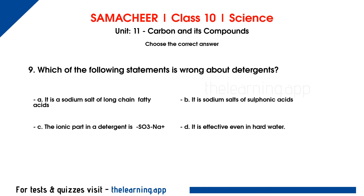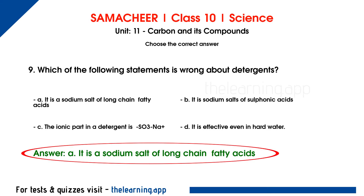Ninth question. Which of the following statements is wrong about detergents? Option A. Sodium salt of long chain fatty acid. Option B. Sodium salt of sulfonic acid. Option C. The ionic part in a detergent is SO3Na+. Option D. It is effective even in hot water. The correct answer is option A — that is the wrong statement. Detergent is sodium salt of sulfonic acid, not sodium salt of long chain fatty acid. Sodium salt of long chain fatty acid is soap.